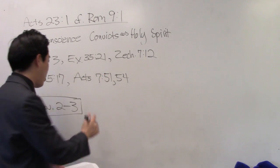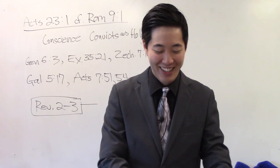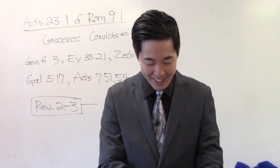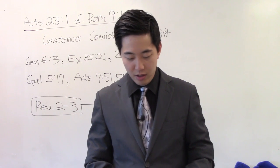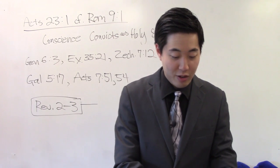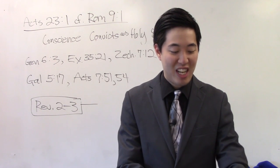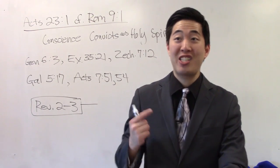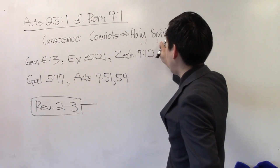Zechariah chapter 7, verse 12. Can somebody read that for us? They gave their hearts as an adamant stone, lest they should hear the law and the words which the Lord of hosts hath sent in his spirit by the former prophets. Therefore came a great wrath from the Lord of hosts. Did you see that? I think that was even more plain. That verse said that those people deliberately rejected, resisted the Holy Spirit convicting them. They made their hearts adamant stone.